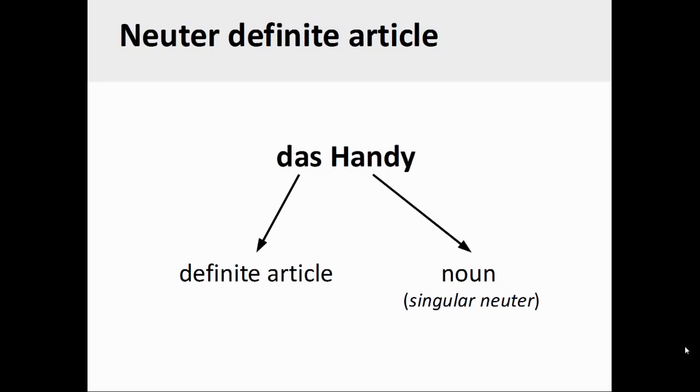The German noun Handy, or mobile phone, is a singular neuter noun. Therefore, its definite article is always das.